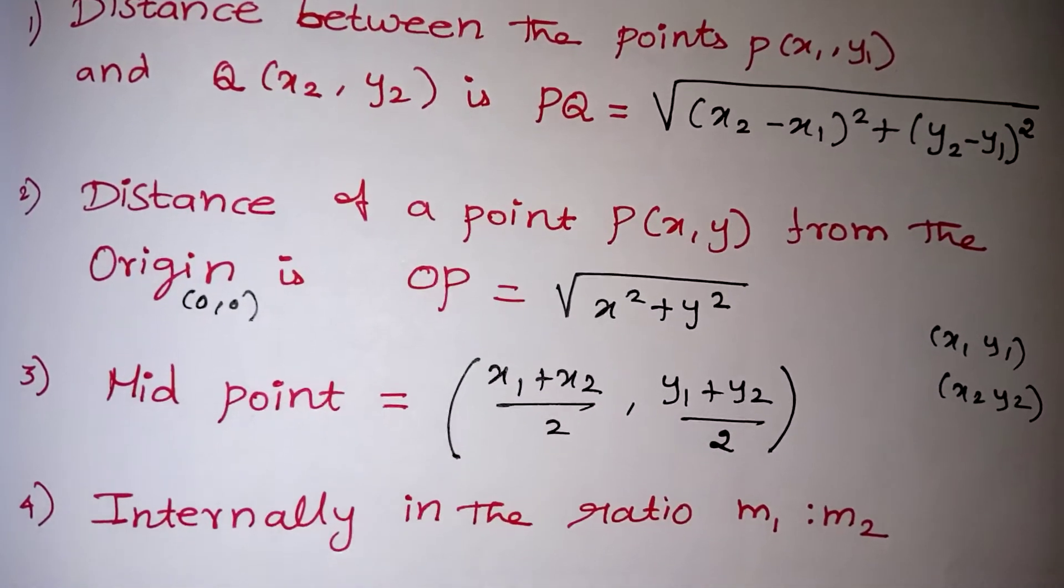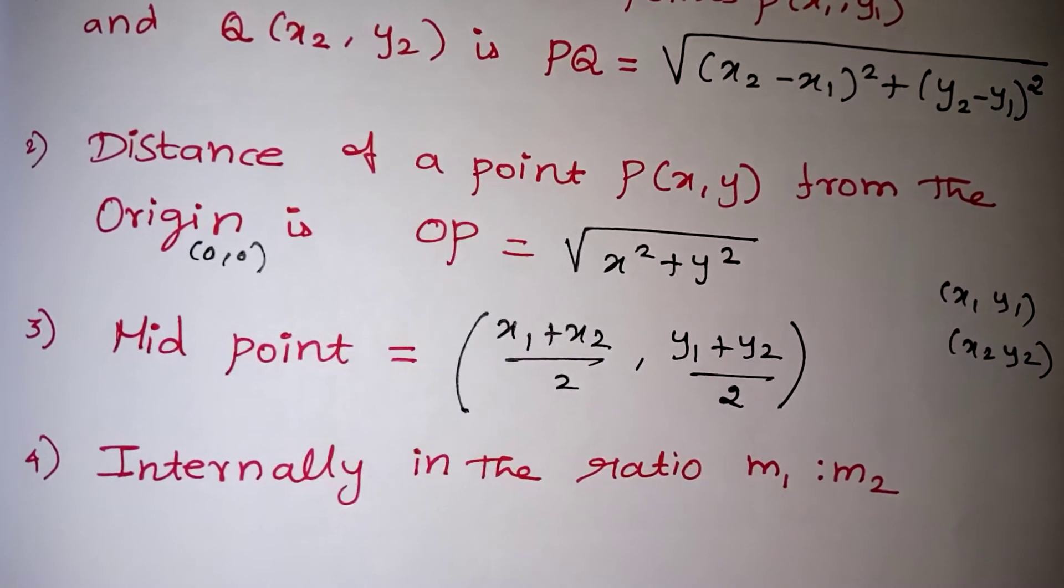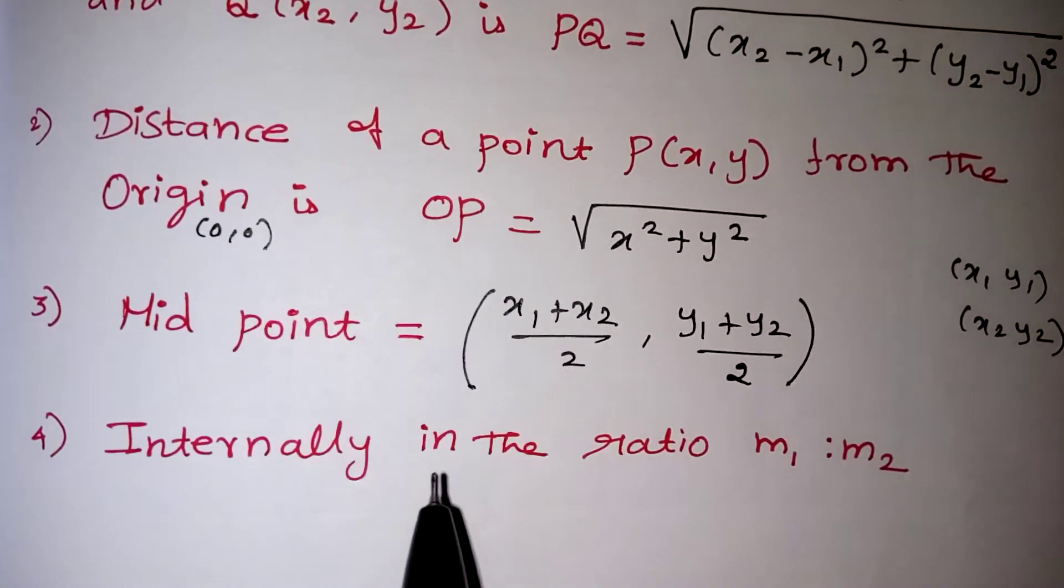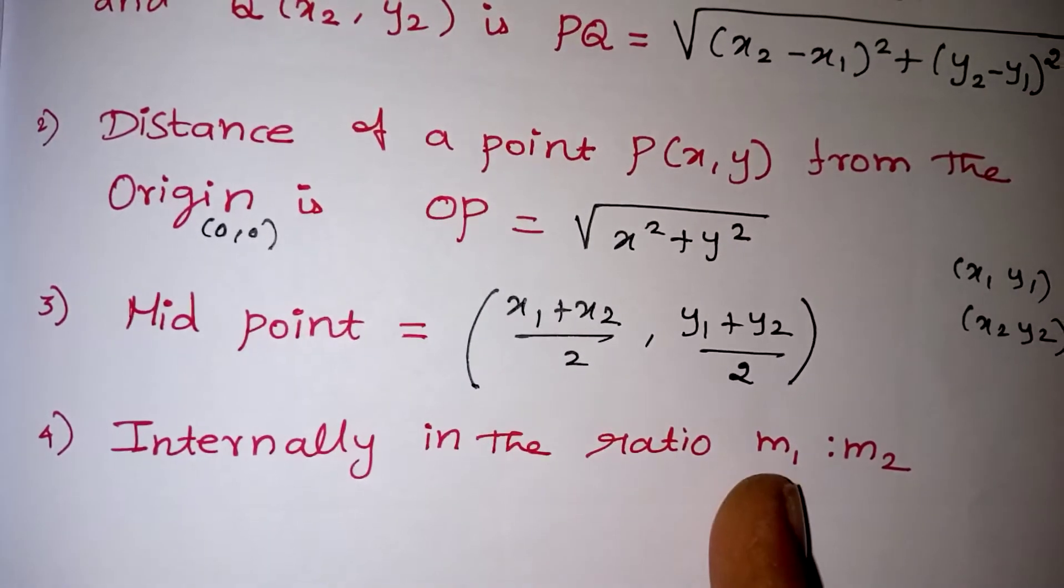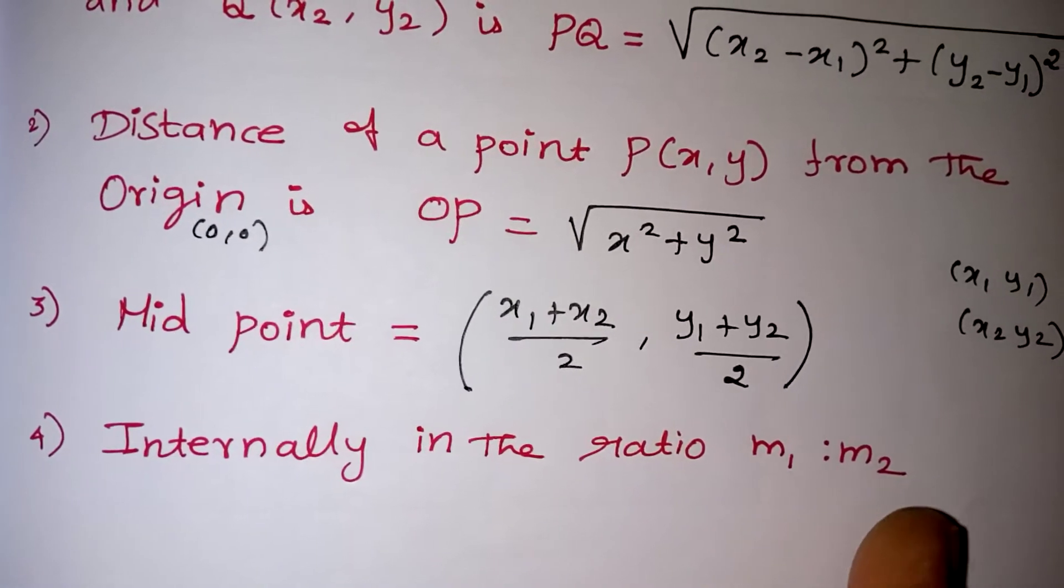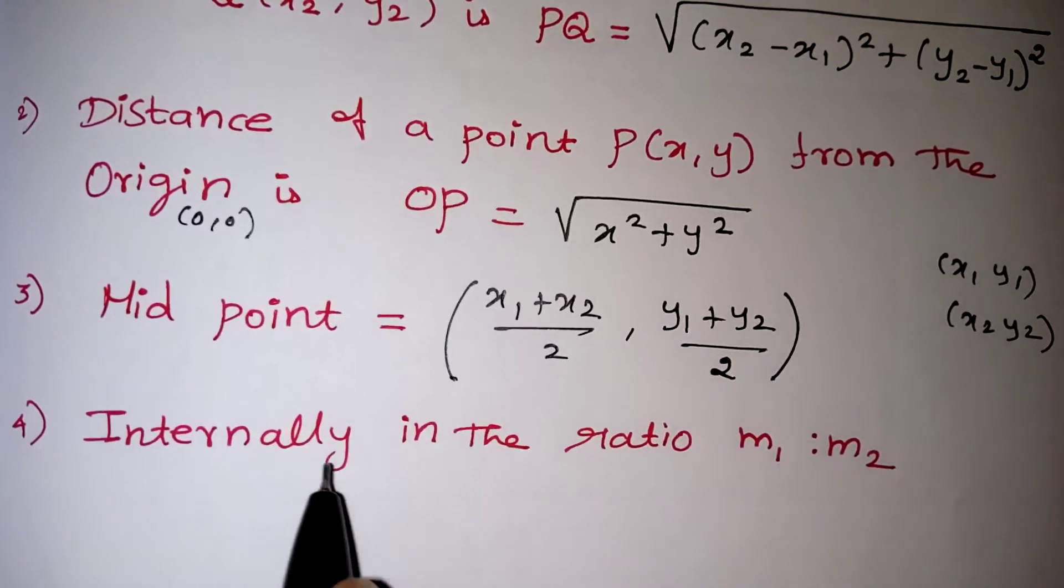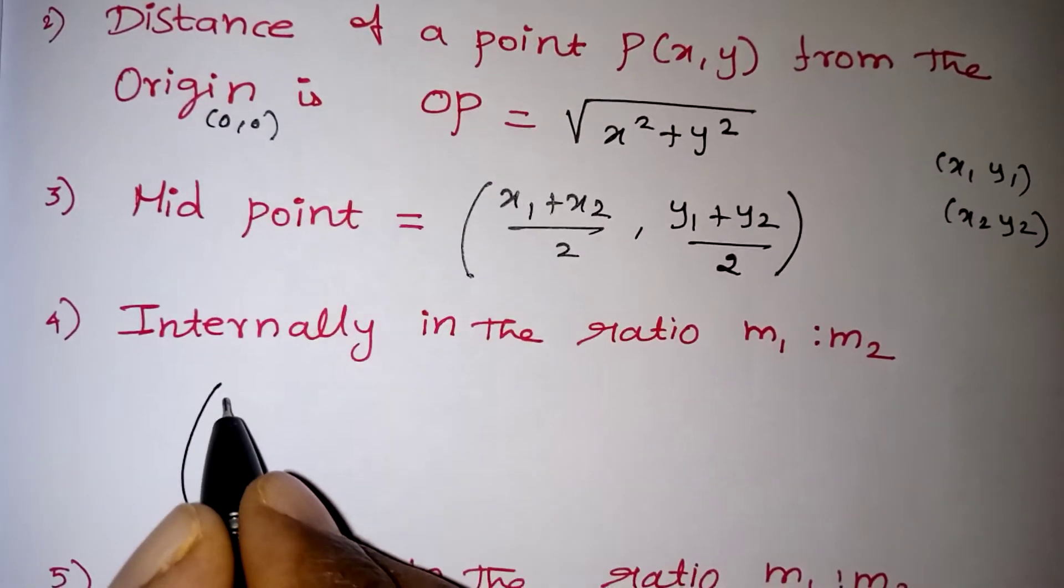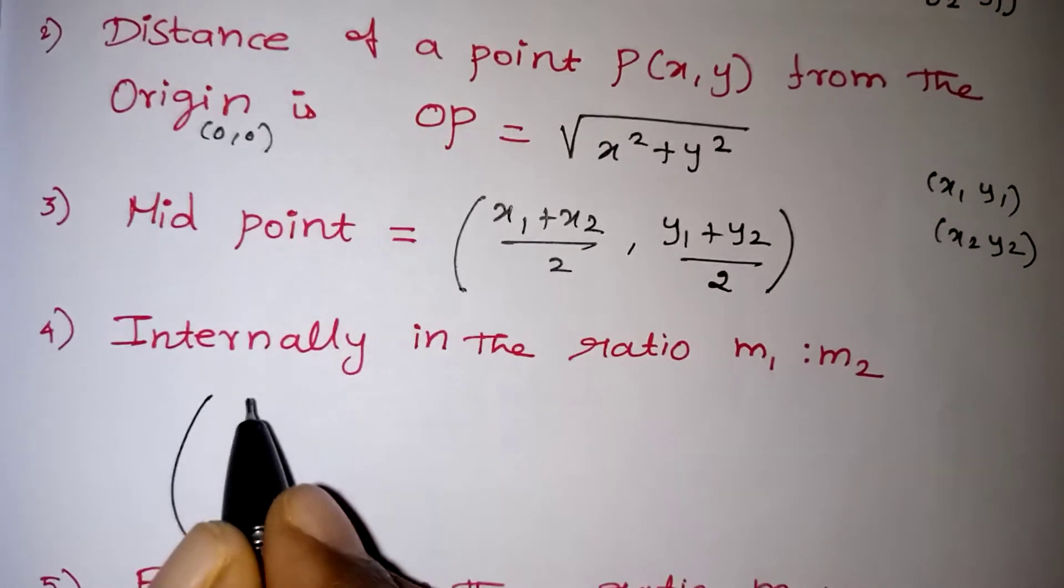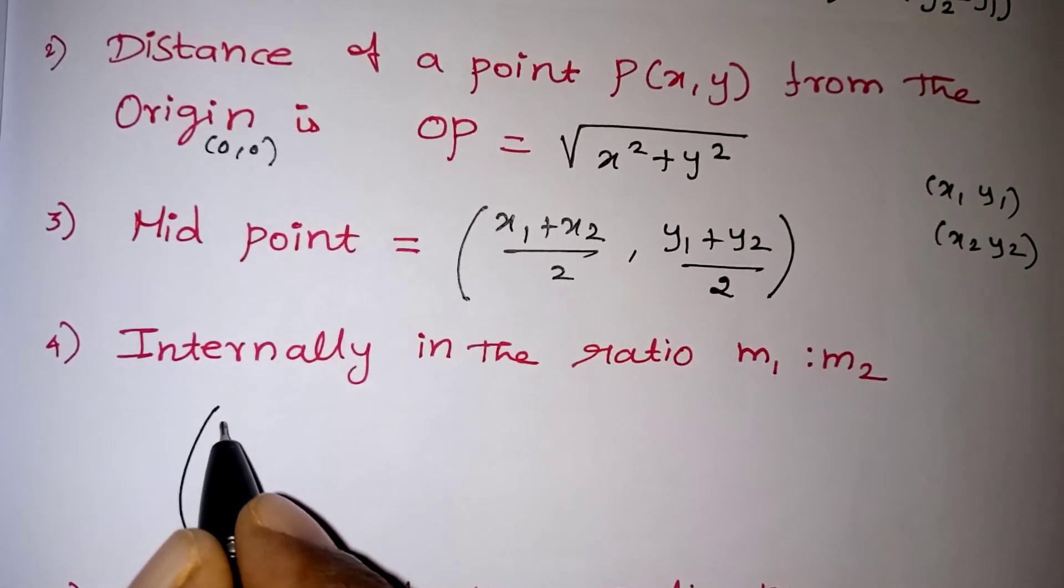Next, we are going to learn internally in the ratio. You have to find a point that divides the line segment internally in the ratio m1 is to m2. If they are asking internally means two points will be given to you definitely. Again, the first point is x1, y1, second point is x2, y2.